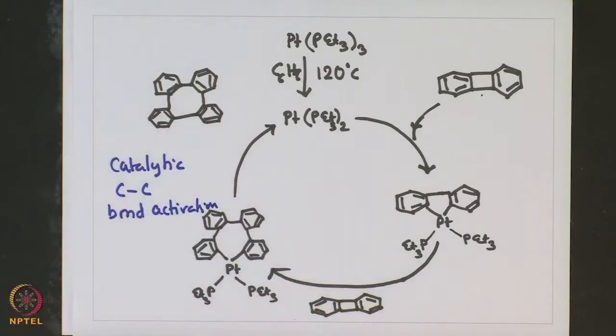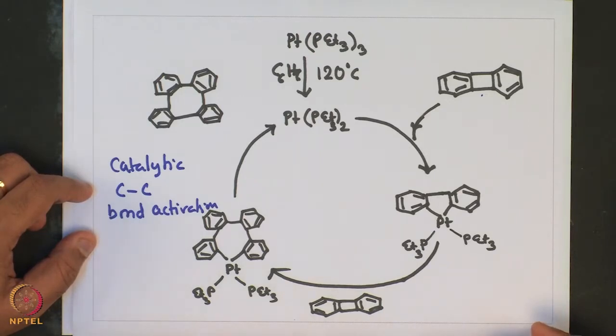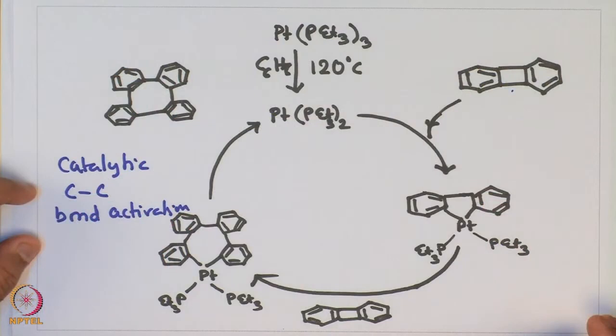From that perspective, this is a very nice example in which catalytic C-C bond activation has taken place, and all of this has been achieved without metal precoordination to the C-C bond. This has been achieved because of release of ring strain as well as removal of anti-aromatic cyclobutadiene conjugation to give something of a more stable nature.